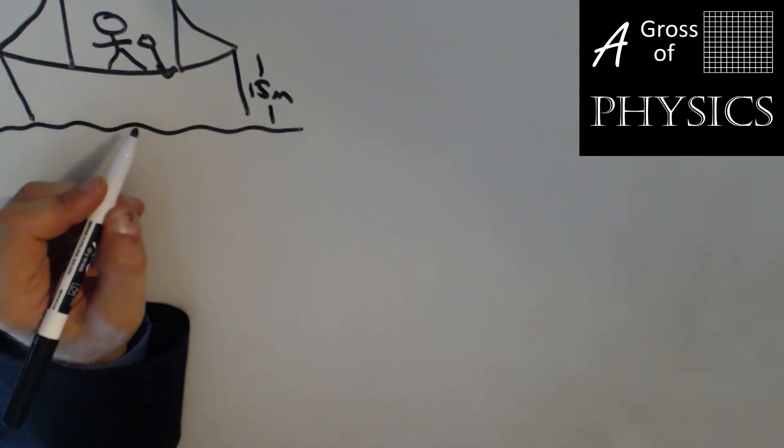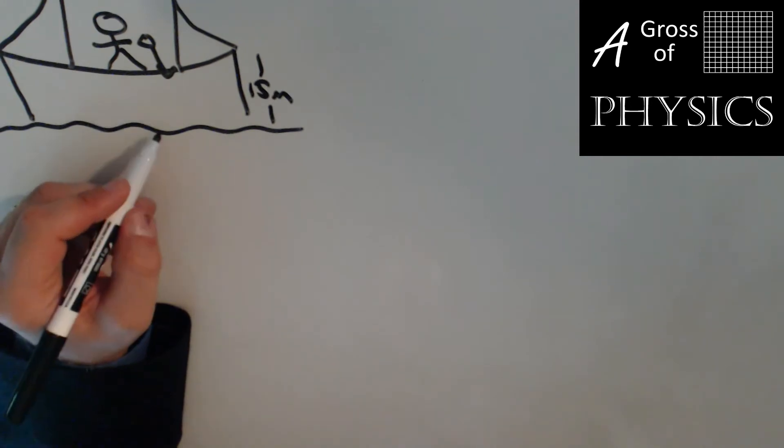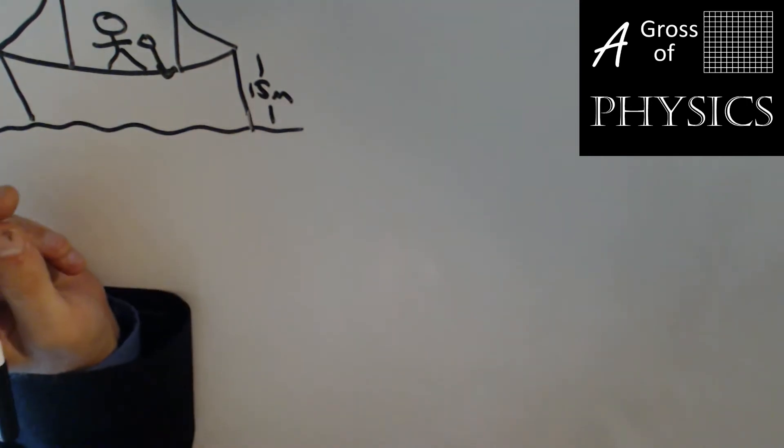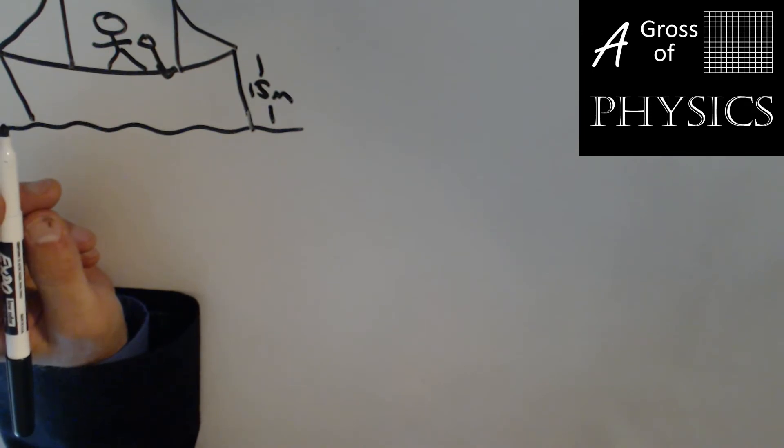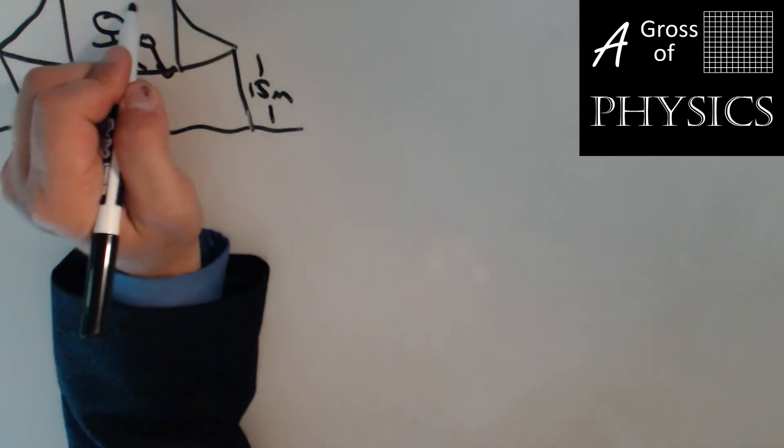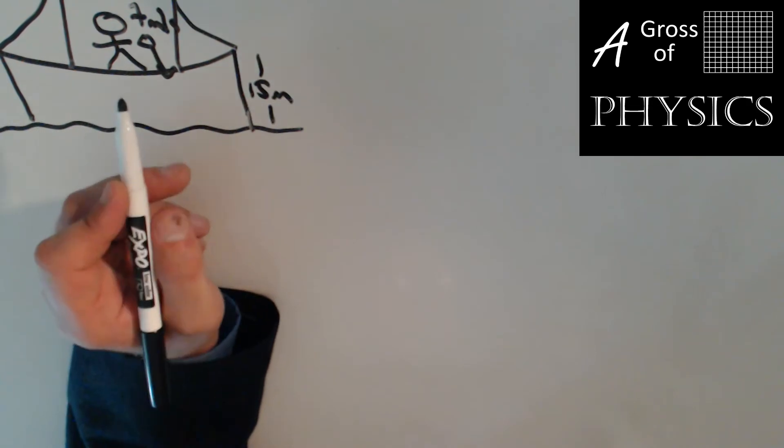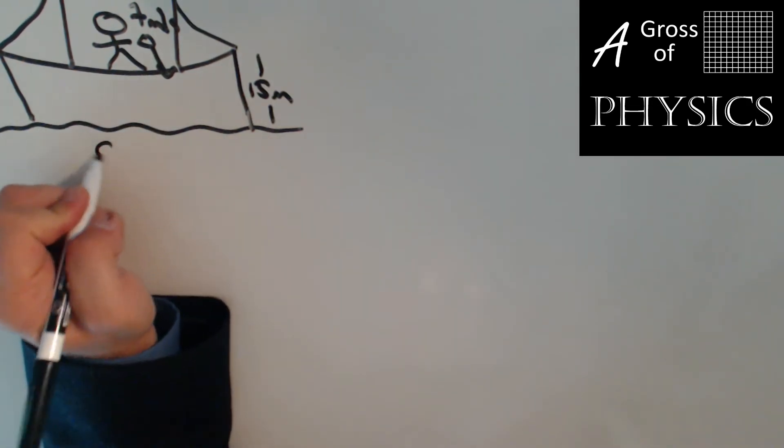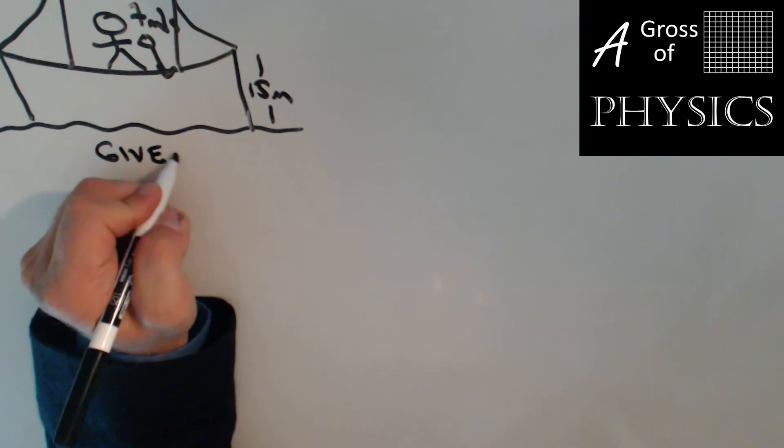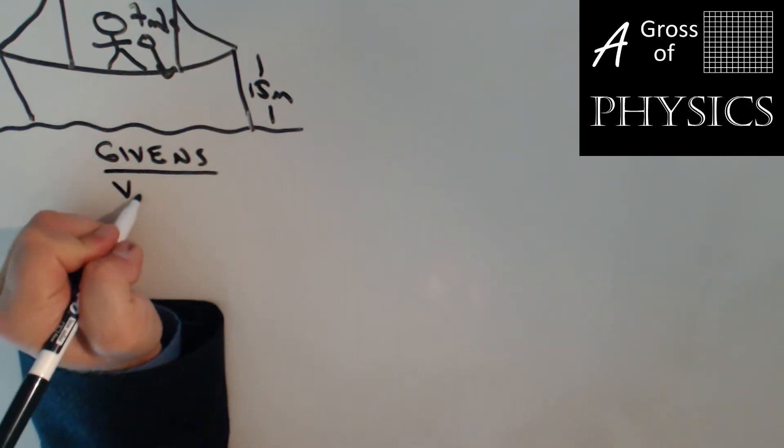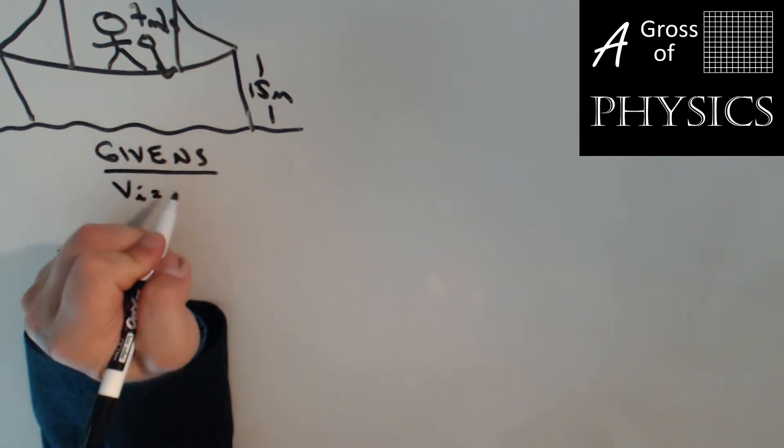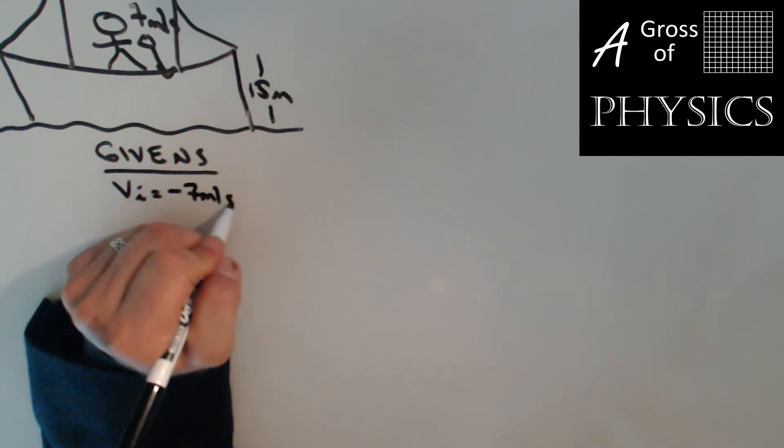A person is going to throw a golf ball down off a bridge. We want to know how long will it take, how long will it be in the air, and how fast will it hit the water below. They give you a 7 meter per second speed, but the key is that it's a downward speed. So speed is a scalar, but when we add the downward, it's going to become our vector that we'll plug in for initial velocity, which is negative 7 meters per second.